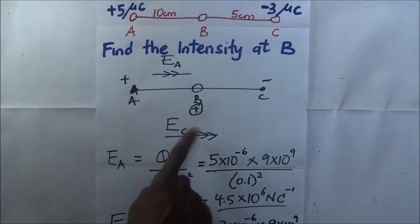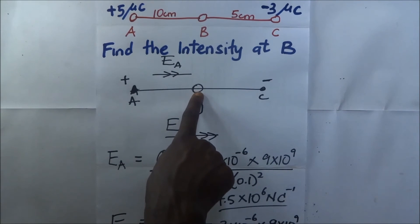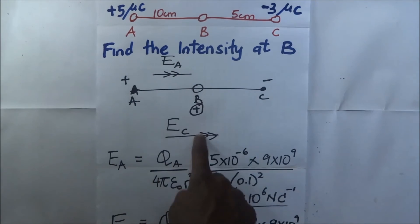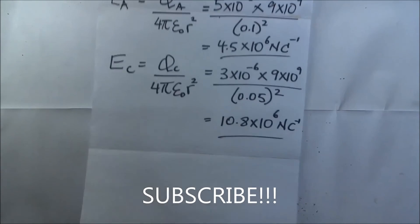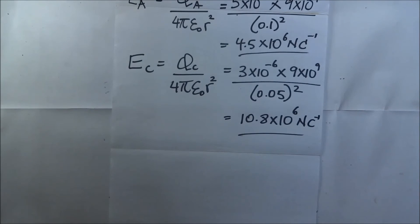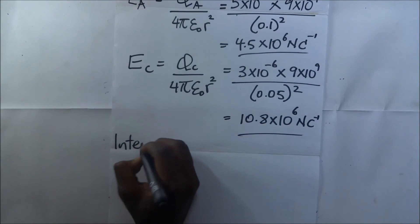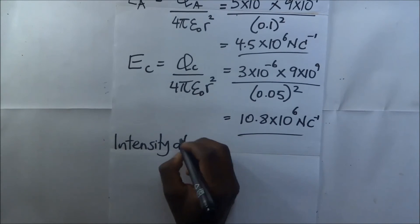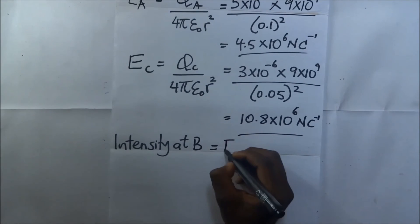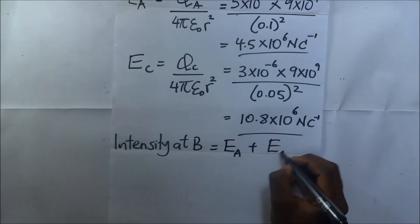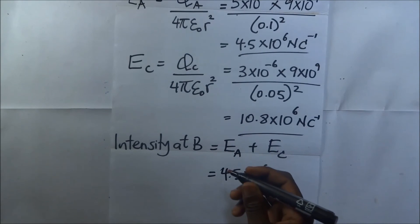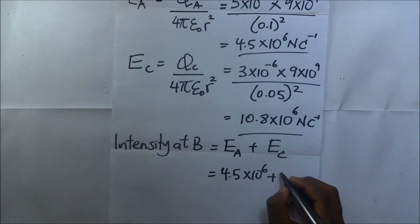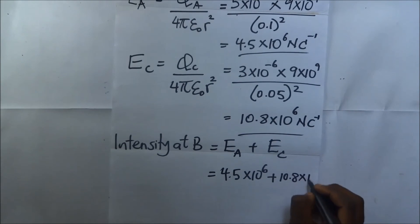Since the intensity due to A and the intensity due to C are both acting in the same direction, to find the total intensity at point B we simply add them. The total intensity at B equals E_A plus E_C, which is 4.5 times ten to the power six plus 10.8 times ten to the power six newtons per coulomb.